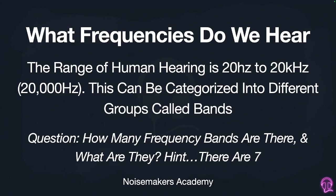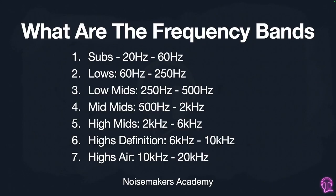So the question becomes: how many frequency bands are there and what are they? There are seven. We have our subs which are 20 hertz to 60 hertz, our lows which are 60 hertz to 250 hertz, our low mids which are 250 to 500 hertz, and our mid mids which are 500 to 2 kilohertz. Our high mids are 2 kilohertz to 6 kilohertz, our high definition is 6 kilohertz to 10 kilohertz, and our high air is 10 kilohertz to 20 kilohertz.